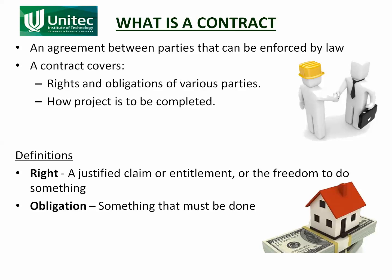The contractor will build the road and the principal will pay the contractor — that's the basic agreement. But obviously there's a lot more behind it: what type of road, how big is the road, how long does the contractor have to build it, what materials need to be used. It is also enforced by law — if the contractor doesn't build the road in the specified way, he is in breach of contract. If that costs the principal money, the principal can sue the contractor for those damages.